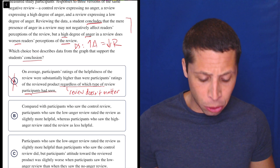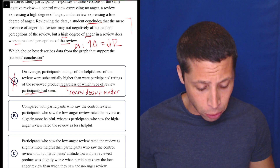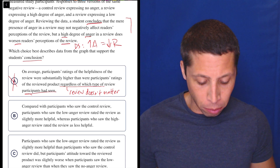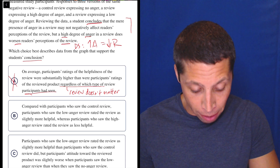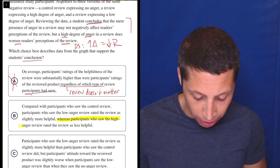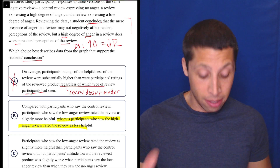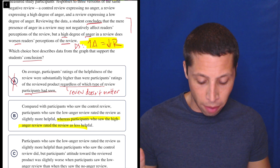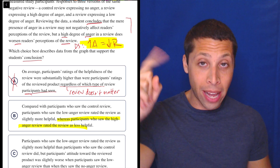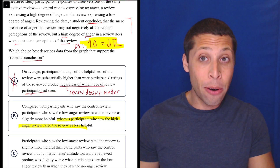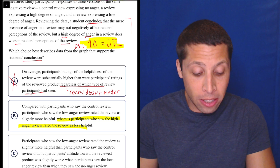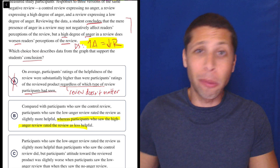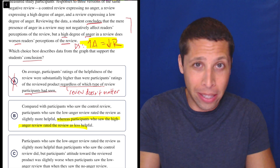Choice B: compared with participants who saw the control review, participants who saw the low anger review rated the review as slightly more helpful, whereas participants who saw the high anger review rated the review as less helpful. I don't really care about the beginning part, but the highlighted part is basically the same thing we noted: as anger goes up, the review is rated as less helpful. That's all I need for now. If everything else is clearly wrong, I don't care about the first half. Let's look at C.